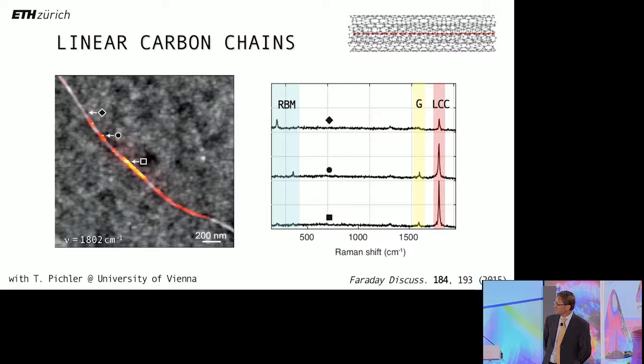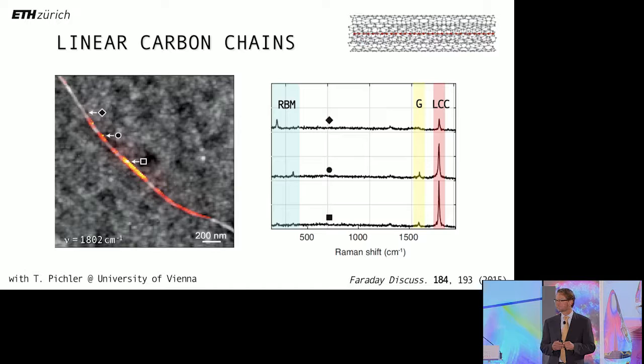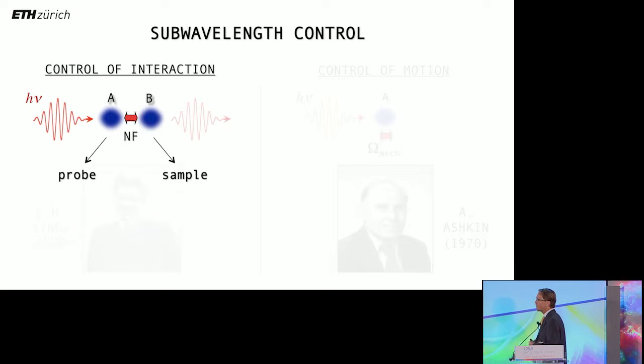And this is where this near-field Raman technique comes in, because what you see in this spectrum, highlighted in red LCC, this is the vibrational spectrum or vibrational fingerprint of this linear carbon chain. And if we now record an image of this nanotube at this particular frequency, 1,800 wave numbers, we can identify the regions where we have these linear carbon chains.